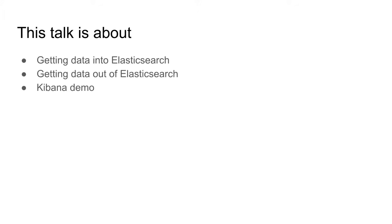There are a lot of different things to discuss with Elastic. They have a product called Beats — a lightweight data shipper you can install directly on your servers — which sends things like CPU and RAM metrics, very useful for monitoring. They also recently acquired an APM tool: think New Relic within your Kibana dashboard. I decided to focus on three things: how we get data into Elastic, how we get it out so our disk doesn't fill up, and a quick Kibana demo.